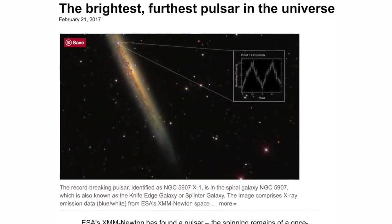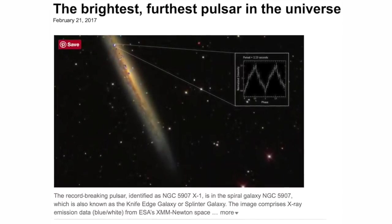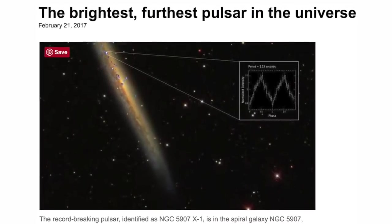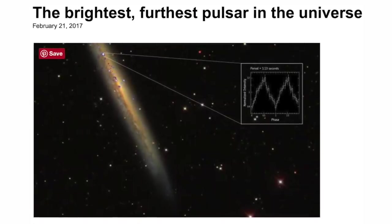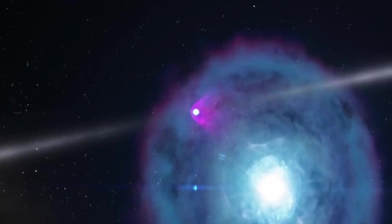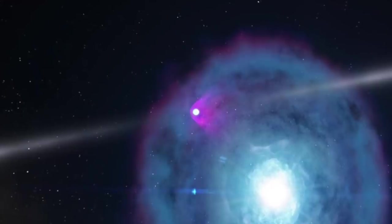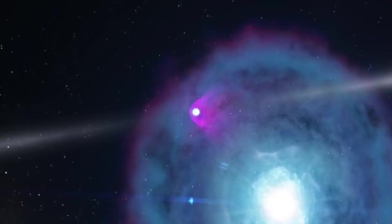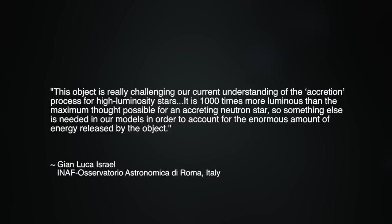More recently, scientists using data from the ESA's XMM-Newton satellite reported their observation of the so-called brightest and furthest pulsar ever observed from Earth. The pulsar reportedly exceeds by 1,000 times the theoretical limit for such an object's brightness. The lead author of a paper on the findings stated, this object is really challenging our current understanding of the accretion process for high luminosity stars. It is 1,000 times more luminous than the maximum thought possible for an accreting neutron star.